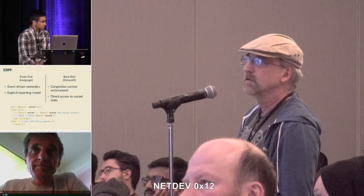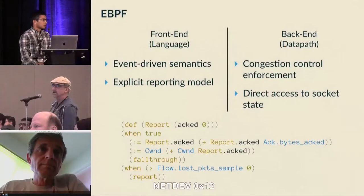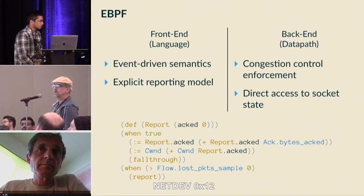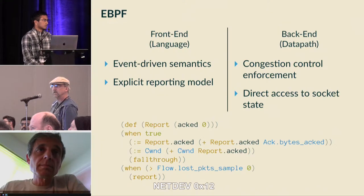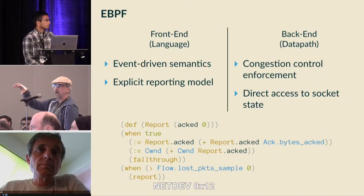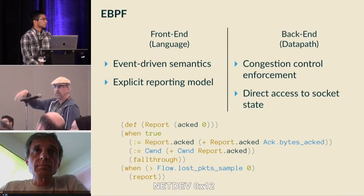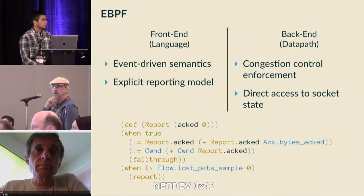We diverged from eBPF on two fronts: the front end, which is the language, and the back end on the datapath. When we looked into eBPF, we found that doing congestion control enforcement — like setting pacing rates and directly changing the congestion window — is a little hard. More importantly, we cared about having the datapath component of CCP be portable across datapaths, so we would have had to implement a BPF runtime in QUIC and in mTCP. The questioner notes you could extend the kernel to call BPF instead of the user-level program. The response is that then you lose the flexibility of making arbitrary decisions in user space, since you'd be restricted to what eBPF can do.